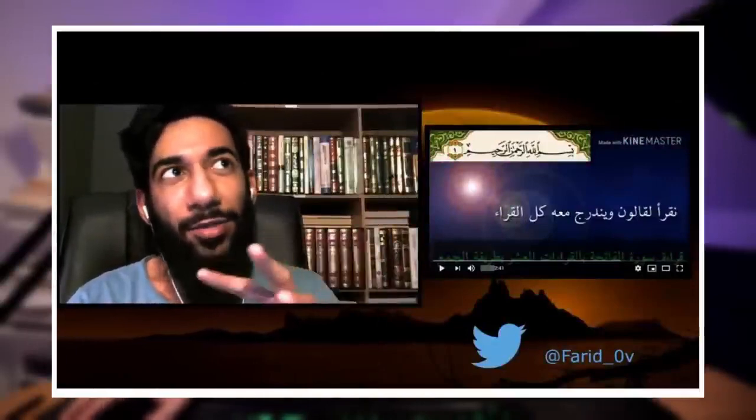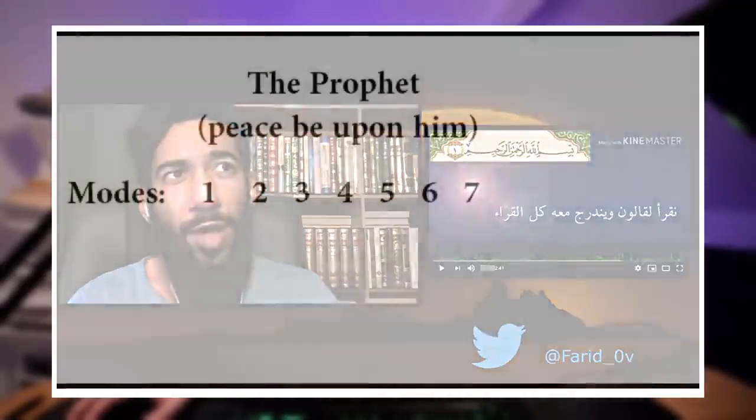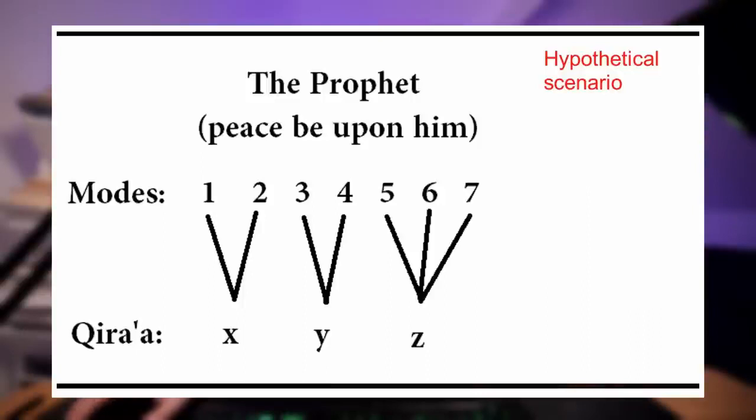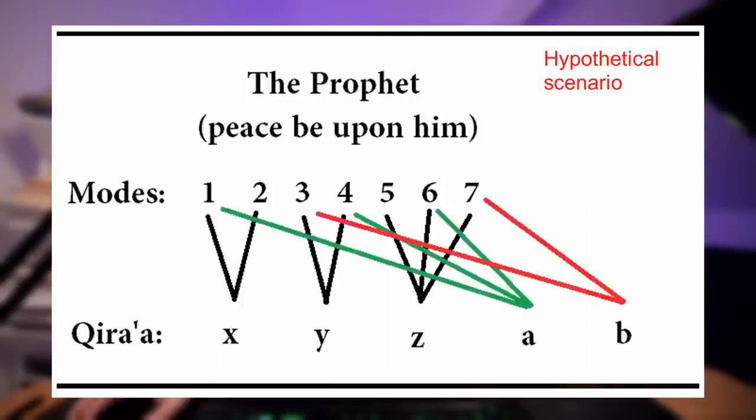Now, what are the Qira'at? The Qira'at are not the Ahruf — the Qira'at are basically a combination of the Ahruf, of the seven modes. So basically, if you hear half the Quran in mode one and the other half in mode two, and you recite it in that manner, then you have Qira'a X. That's basically the idea of what a Qira'a is — it's a combination of the modes. So Farid comes up with this diagram where he tries to explain that the Qira'at and the Ahruf are not the same thing but are related, which is probably the best chance a Muslim apologist would ever have of explaining the Ahruf by making some connection between the seven different modes and the ten canonised Qira'at.